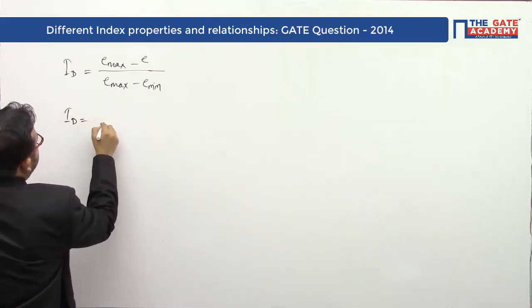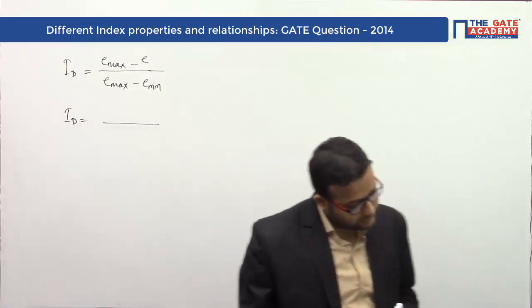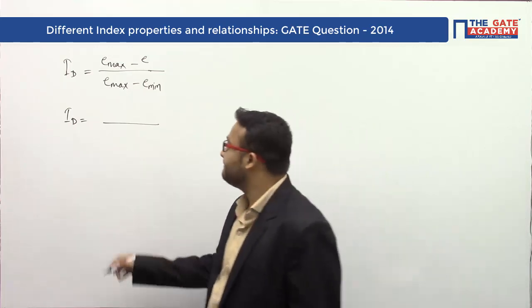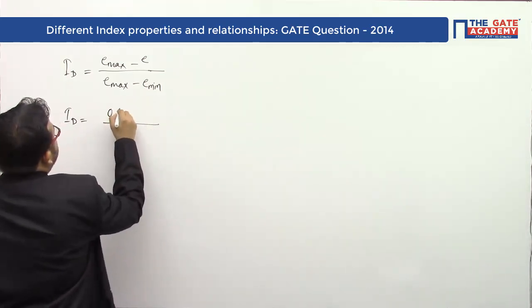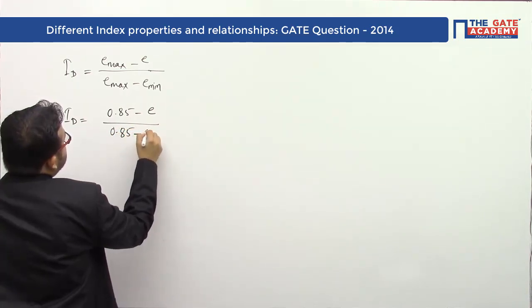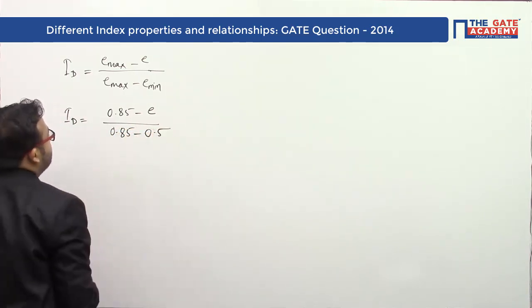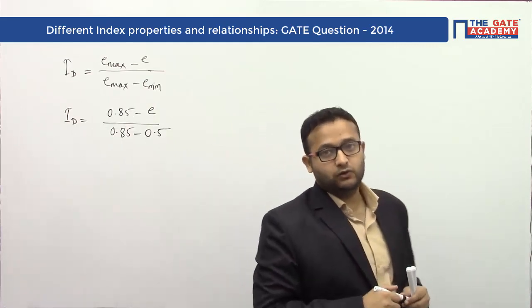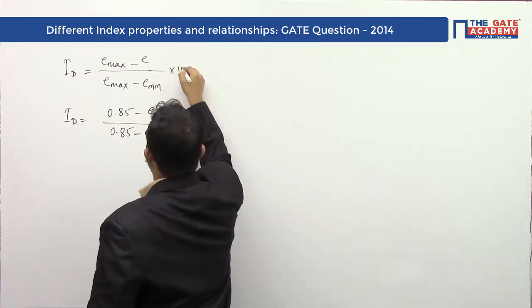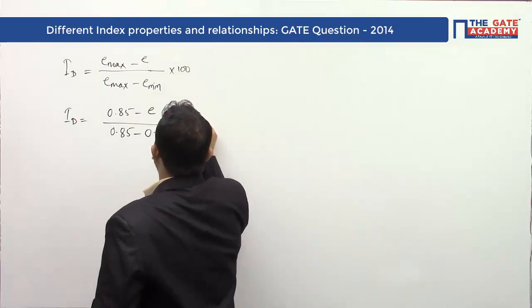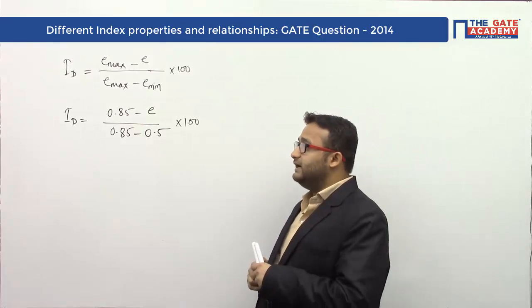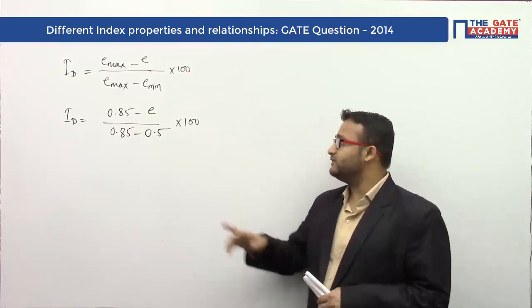Let me write the values in this formula: I_D = (0.85 - e) / (0.85 - 0.5) × 100. To calculate this in percentage, multiply by 100. To estimate the density index value, we need to calculate first the value of e, the natural void ratio present in the soil.